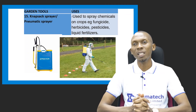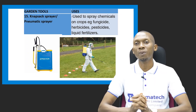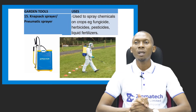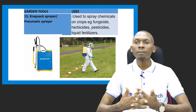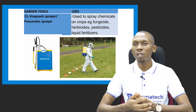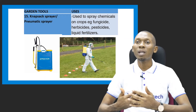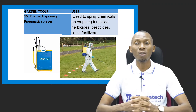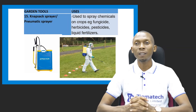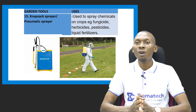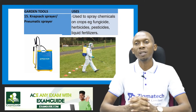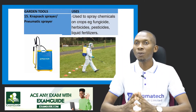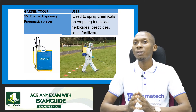The knapsack sprayer, also called the pneumatic sprayer, is another garden tool used to spray chemicals on our crops, which is a form of fumigation — both for pest control and weed control. The chemicals used could be fungicides, herbicides, pesticides, or liquid fertilizers. Applying liquid fertilizers through a device is called fertigation.